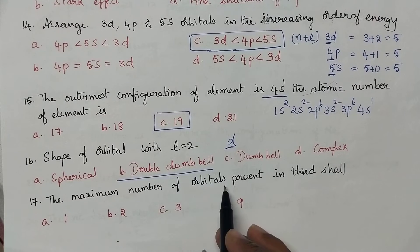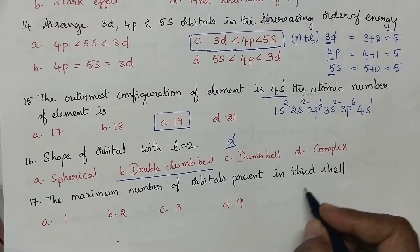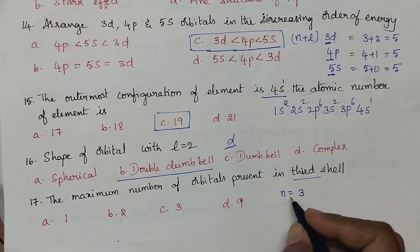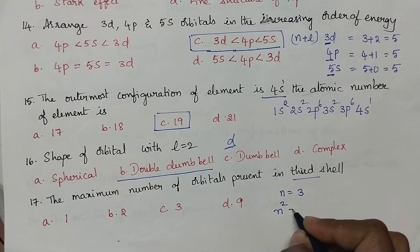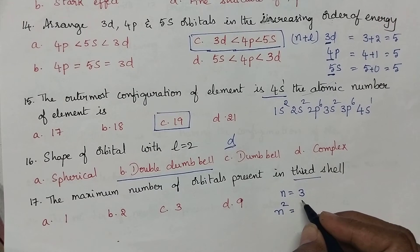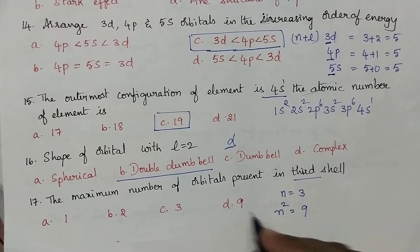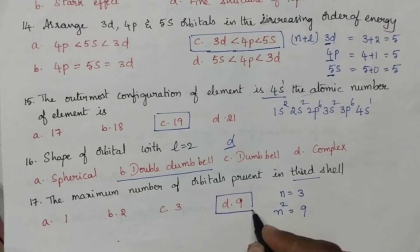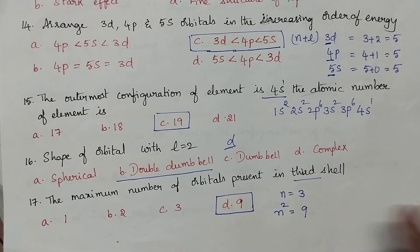The maximum number of orbitals present in the third shell: third shell means the n value is equal to 3, and from the n value we can calculate the number of orbitals using the n square formula. Hence, it is option D. The number of orbitals present in the third shell is equal to 9.